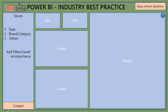The next thing is about the visual alignments. When it comes to visual alignments, there are two things. One is the slicer pane. The slicer pane should be on the left side or on the top. One more thing to note is in the slicer pane, you need to keep options like date, brand, category, and others in a sequential way. The most important ones should be at the top and less important things at the bottom, so it is easy for users to filter the report based on their selections.